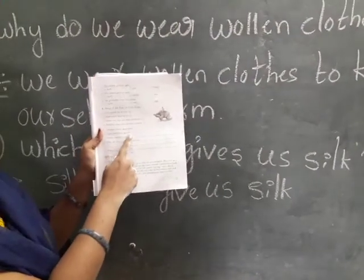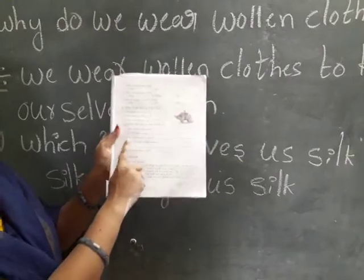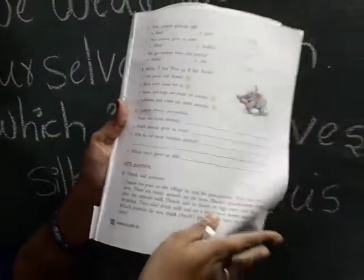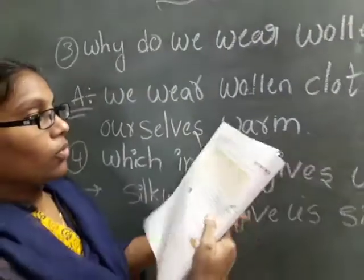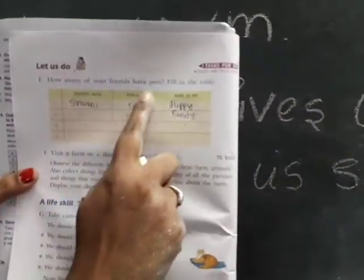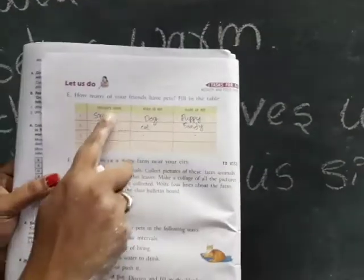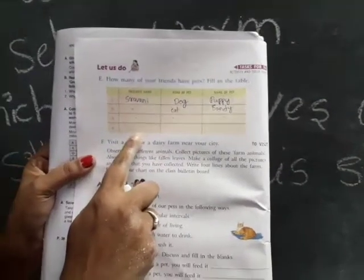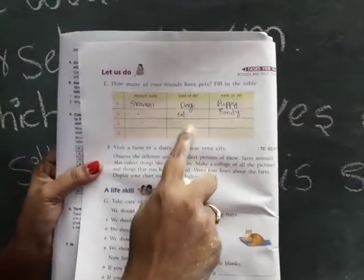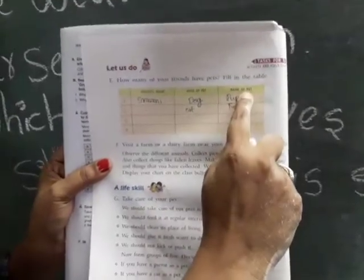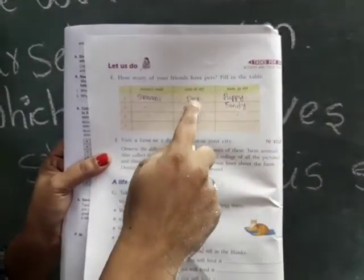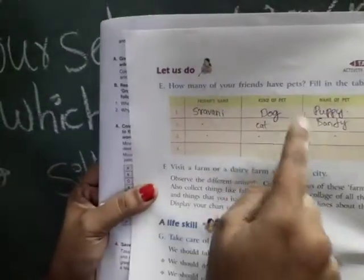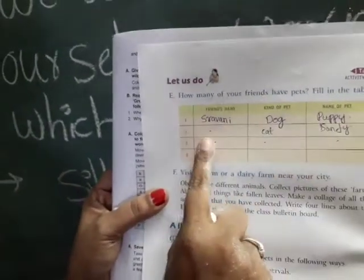These four questions and answers — you write on page twenty-seven. Answer these questions. You can write here and in your notebook also. Next, it is your homework: how many of your friends have pets? Fill in the table. First column: friends' names. Second column: kind of pet. Third column: name of the pet — dog or cat, the nickname. Page number twenty-eight.